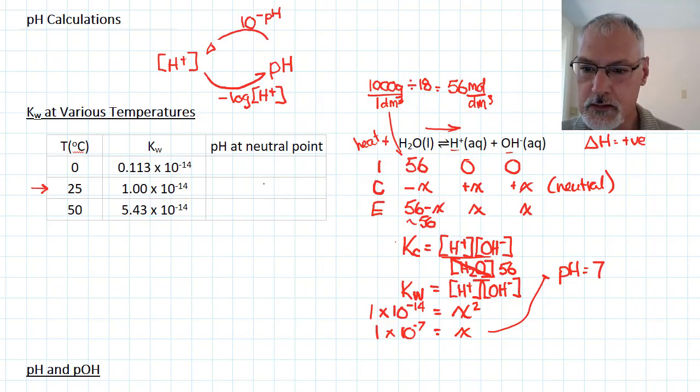Now, that makes sense. At the neutral pH, we have an equal number of acid and base particles, and we would be at 7. Now, suppose, though, we go to a warmer temperature, 50 degrees.